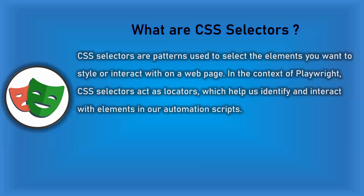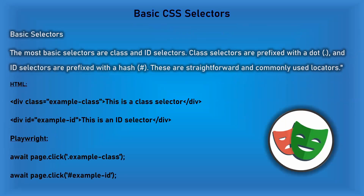Now from the Playwright perspective — basic CSS selectors. We have already seen that hash symbol and dot symbol are used for ID and classes respectively. Here it is mentioned: the first two lines show how the HTML looks. For example, class has the value 'example class' and ID is 'example ID'. To use these in your Playwright script — for a class, start with dot; for an ID, start with hash.